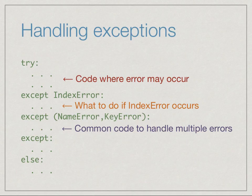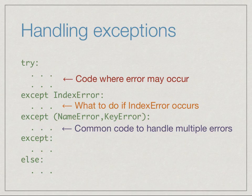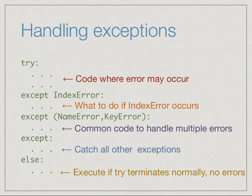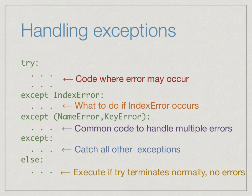Python also offers a very useful alternative clause called else. This else is in the same spirit as the else associated with a for or while: just as a for or while that does not break executes the else, here if the try executes normally — that is, no error is found — then the else will execute; otherwise the else is skipped. So the overall structure is: a try block, a sequence of except blocks catching different exception types, an optional bare except for all others, and an else that executes if the try terminates normally with no errors.